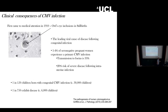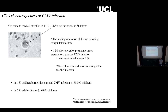CMV first came to medical attention back in 1910, though the virus wasn't actually isolated until 1953. What they noticed was that when they looked in stillbirths, they could see these owl's eye inclusions — they thought it was an infection, which we now know is a viral infection. One of the characteristics of CMV infection is that cells become enlarged — hence its name, cytomegalovirus, the big cell virus. What people really aren't aware of is that CMV is the leading viral cause of disease in congenital infection.